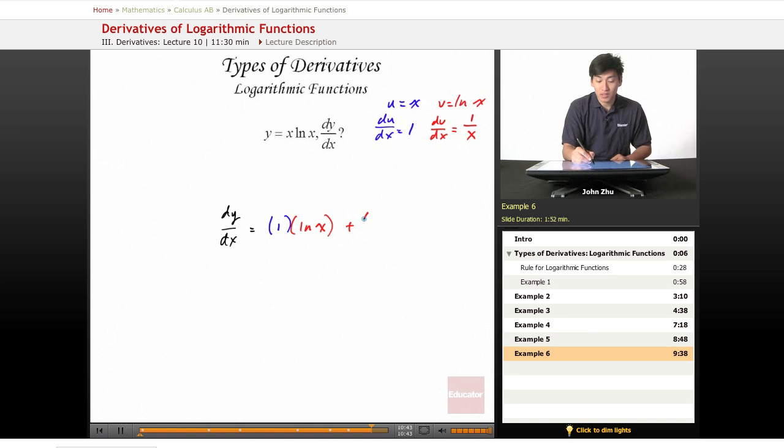plus derivative of the second term, 1 over x, times the first term. And we see that this simplifies down to ln of x plus 1, or x over x.